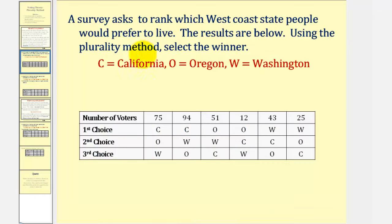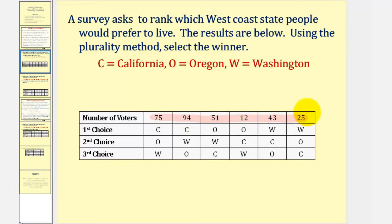A survey asked people to rank which west coast states they prefer to live in. The results are below — use the plurality method to select the winner. We're looking at the preference table here, where C equals California, O equals Oregon, and W equals Washington. By finding the sum of these values, we can determine the total votes is 300.